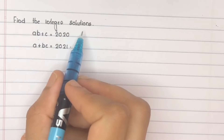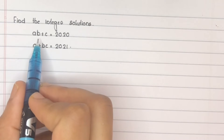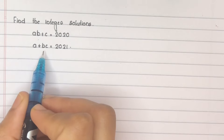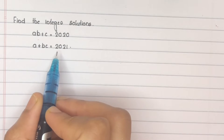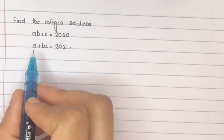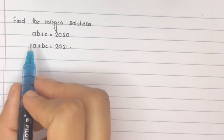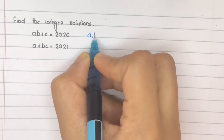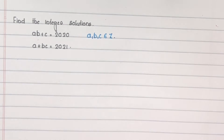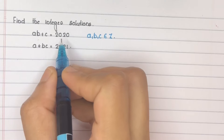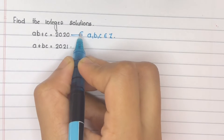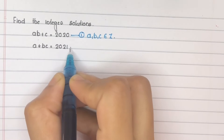Find the integer solutions: AB plus C equals 2020, and A plus BC equals 2021. The question is to find the values of A, B, and C, where A, B, and C belong to integers. As the first step, consider the given equations and mark them as equation 1 and equation 2.